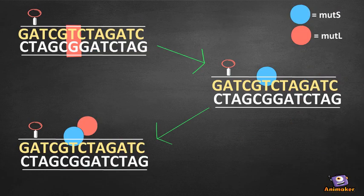MutS binds to the duplex DNA that contains mispaired bases and small insertions or deletions. It binds ATP and ADP and interacts with MutL.